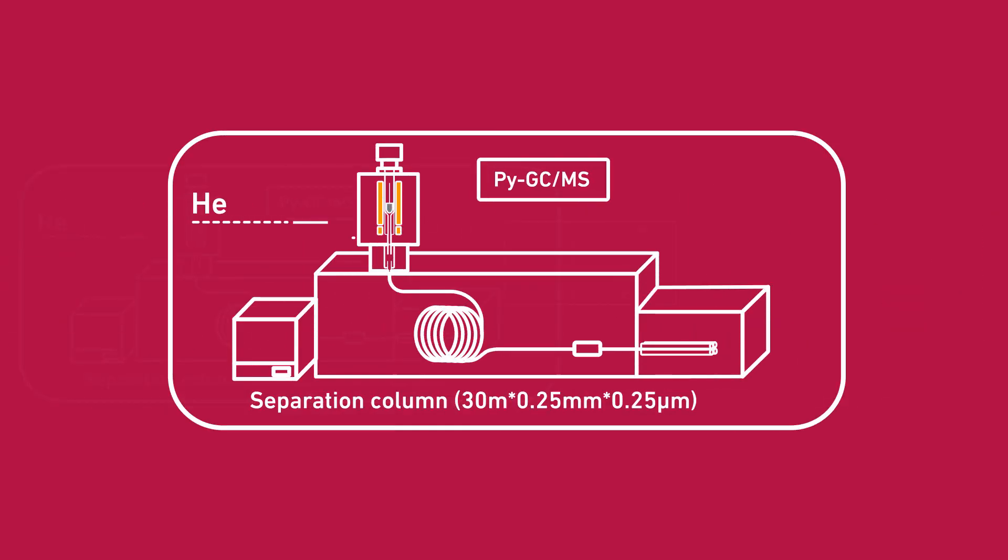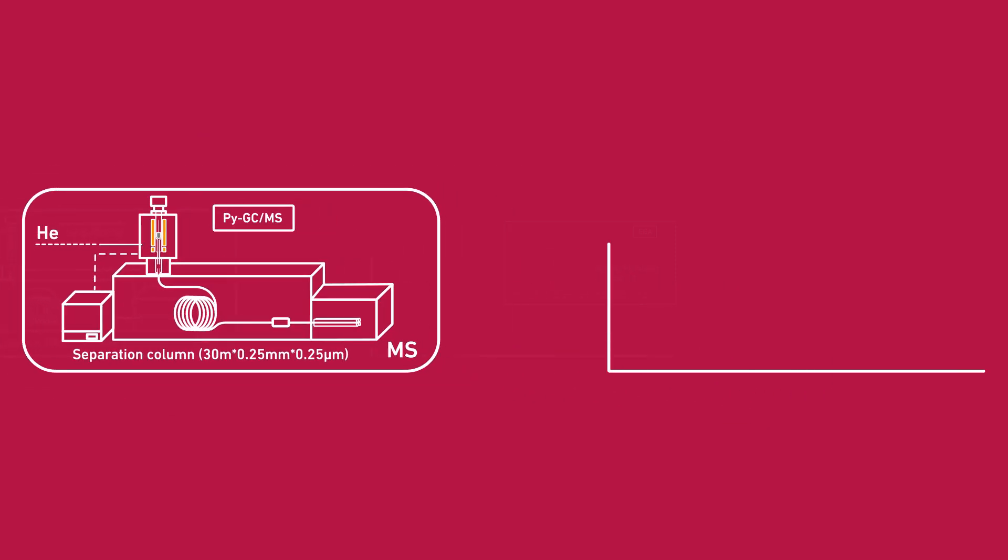To perform flash pyrolysis, the evolved gas analysis tube or EGA tube is quickly and easily exchanged with a separation column without venting the mass spectrometer.